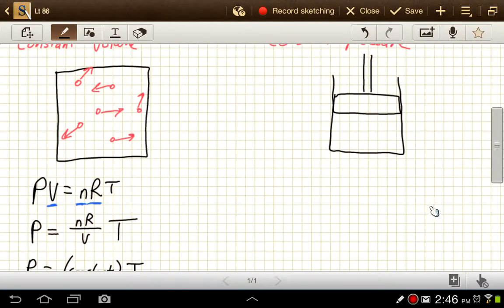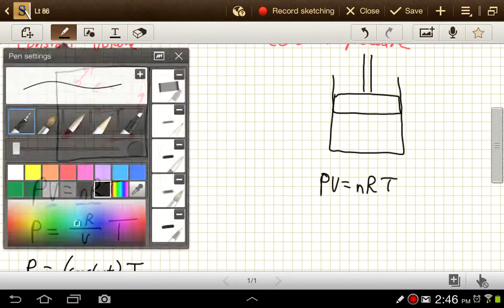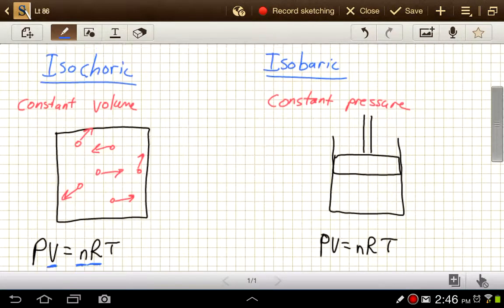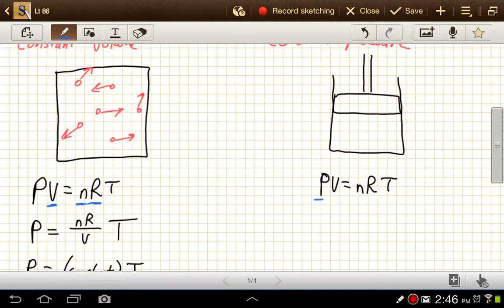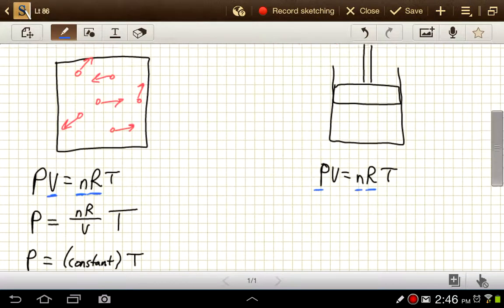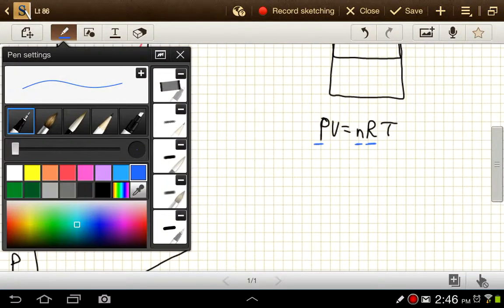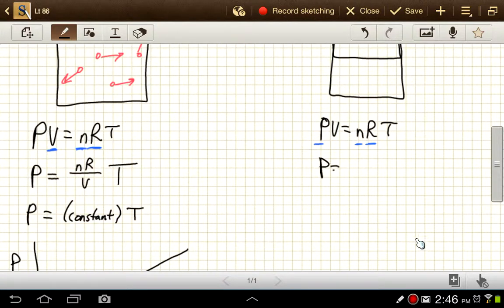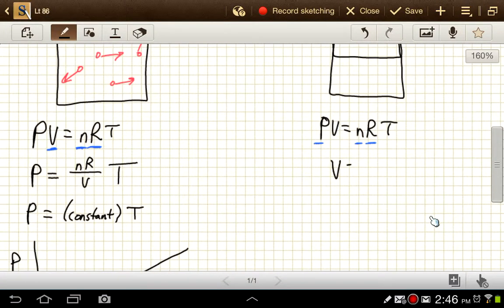So in this one, when we look at the ideal gas law, the ones that stay constant, well this is isobaric, that's constant pressure, so that stays constant. And N and R always stay constant, so it's just V and T that change. So if we rearrange this equation, we get V is equal to NR over P times T, and then NR and P are all constants, so that's going to be just some constant times the temperature.